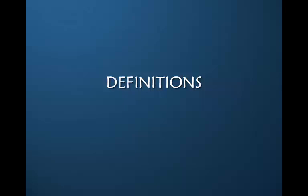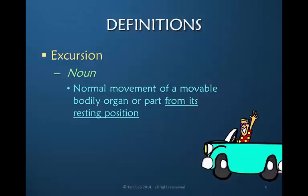Let's start with a few definitions so that we know that we're all on the same page. The word excursion is used relative to tendon movement. It is a noun describing the movement of a movable bodily organ or part from its resting position. So the word excursion used in relationship to flexor tendons means the movement of the tendon relative to its surrounding bed of tissue.